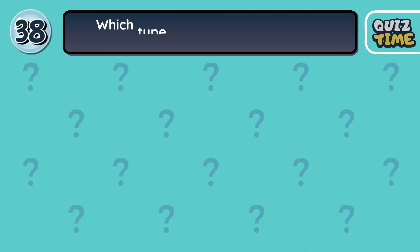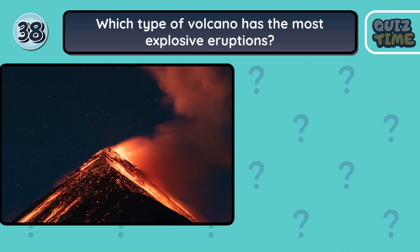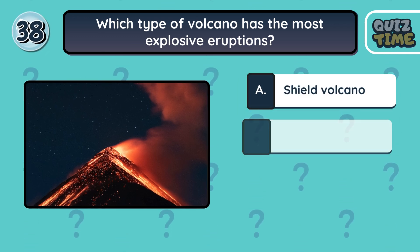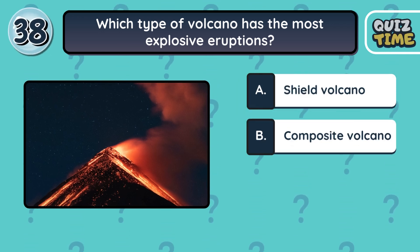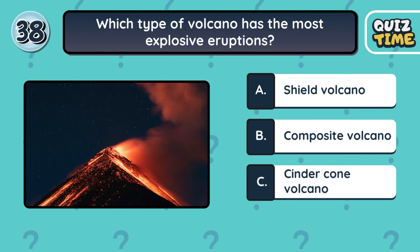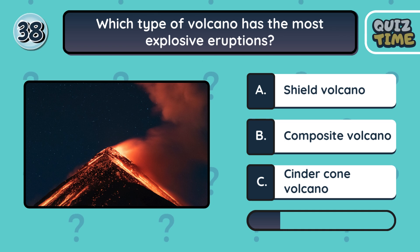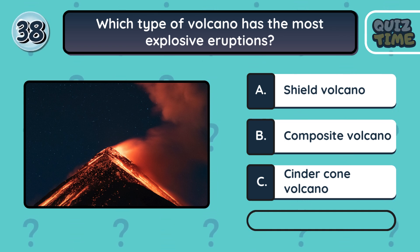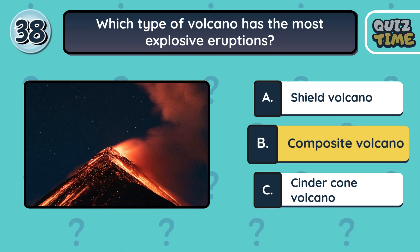Number 38. Which type of volcano has the most explosive eruptions? A. Shield volcano. B. Composite volcano. C. Cinder cone volcano. The correct answer is B. Composite volcano.